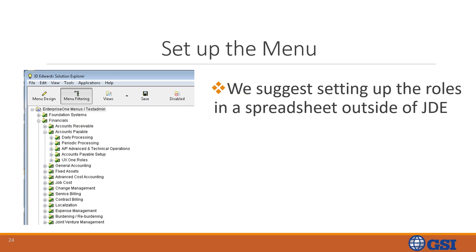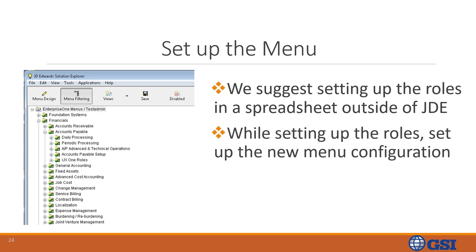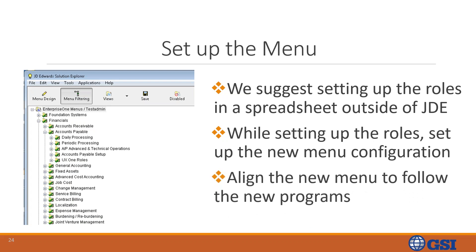As part of our recommended best practice, we advise setting up your menu. First, we suggest using a spreadsheet outside of JDE to make it easier to move things around and customize it. While setting up the roles, you would configure the new menu and align it to follow the new programs. We suggest separating the menu by department or module — for example, foundation systems, financials, then accounts receivable and accounts payable. Within modules, you break it down by process, and then by applications and UBEs, which are programs and reports, allowing users to find programs easily.